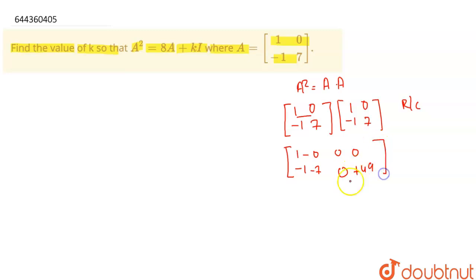So what I got is [1, 0, -8, 49]. Okay students, clear up to now. So we have got A² equal to this matrix.